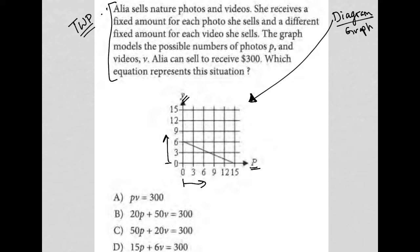The information here says Aaliyah sells nature photos and videos. She receives a fixed amount for each photo she sells and a different fixed amount for each video she sells. The graph models the possible numbers of photos P and videos V Aaliyah can sell to receive $300.